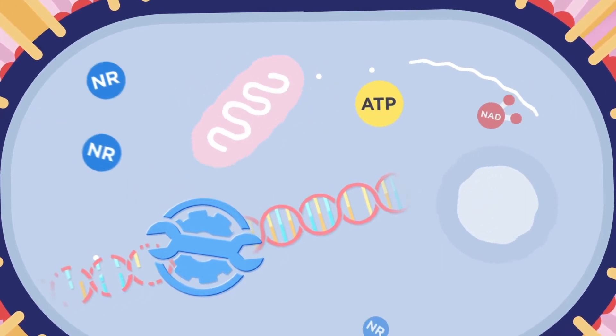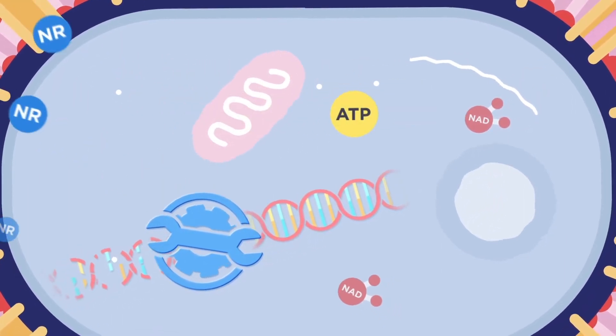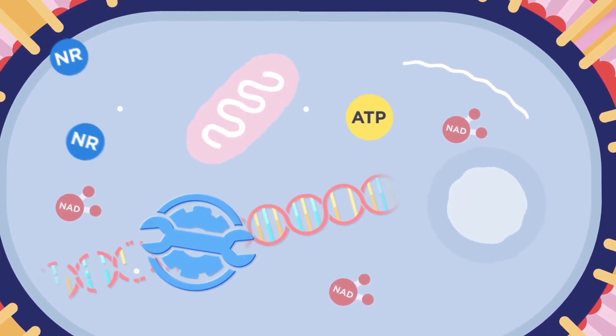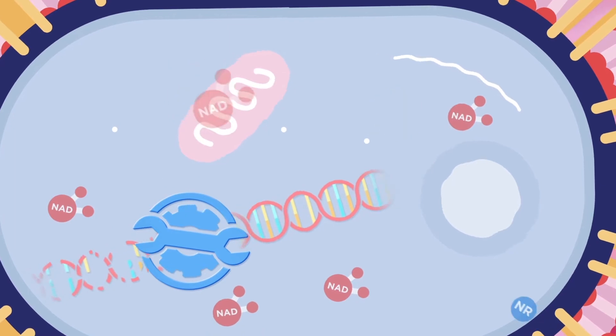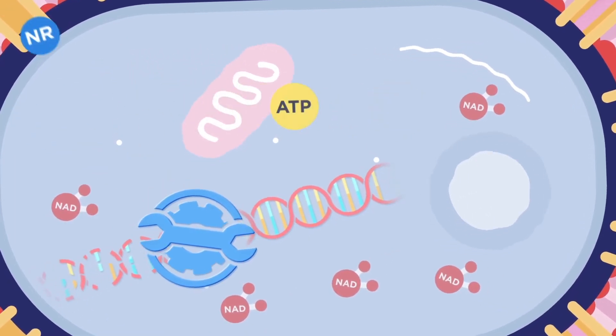Cells function best when they have a healthy supply of NAD on hand. When they don't, they struggle to perform their normal functions, which include creating ATP for energy, repairing your cells, and supporting healthy mitochondria.